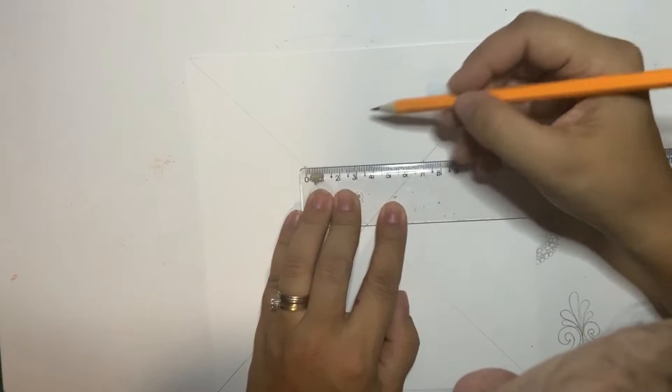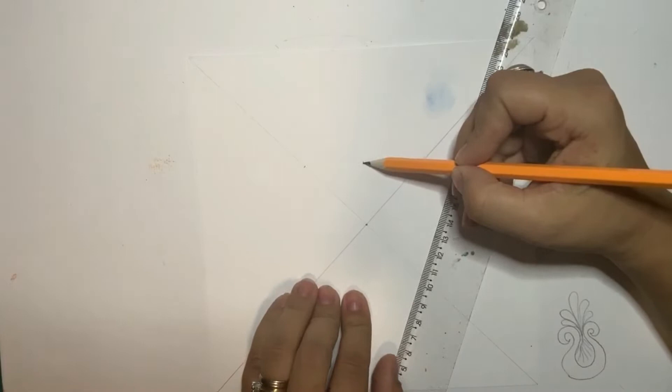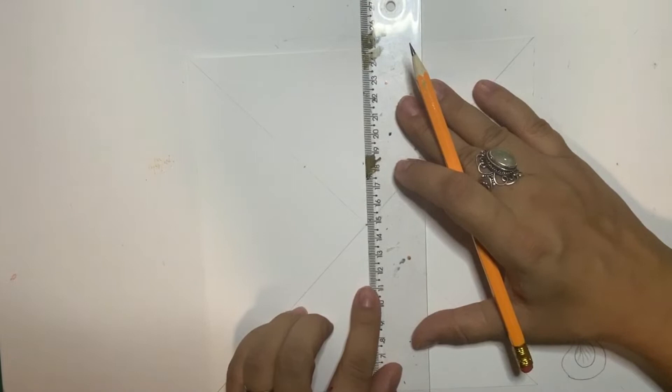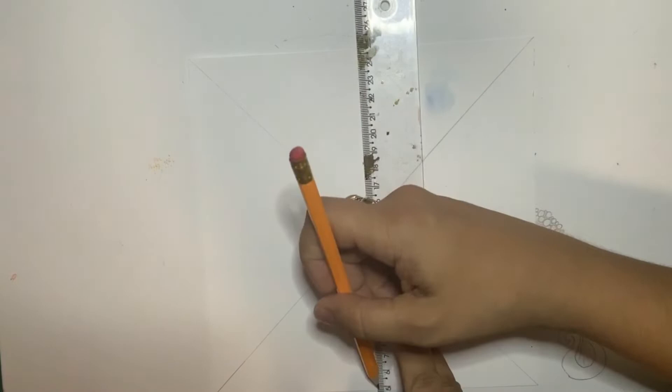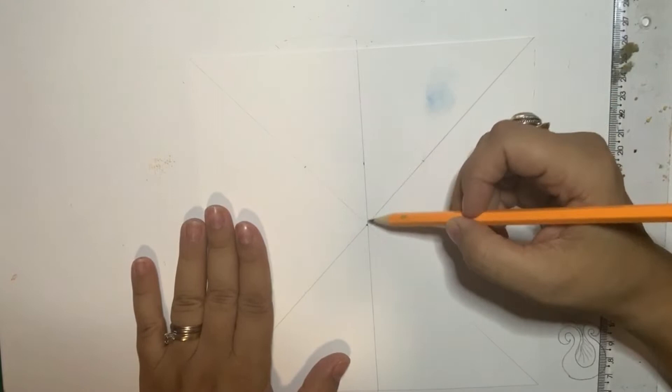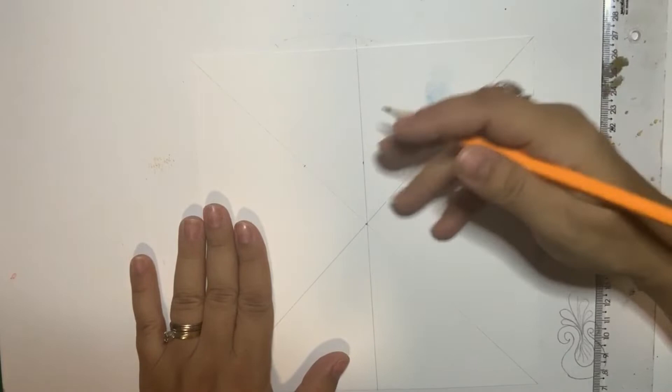So half of seven is 3.5 centimeters. Then to draw a line I need those dots so I can draw a line from this half mark that I've made with the center mark, and then I make this vertical line. So now I have divided myself into six pieces.